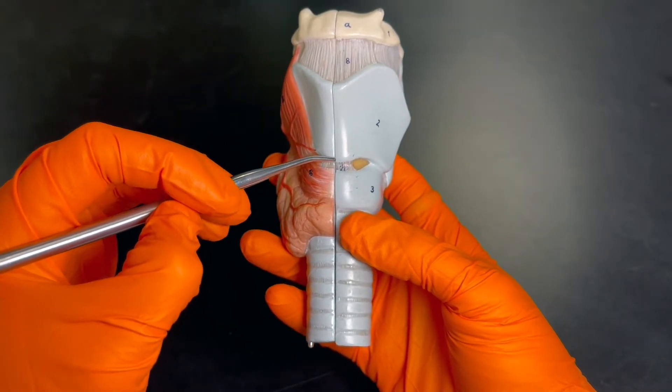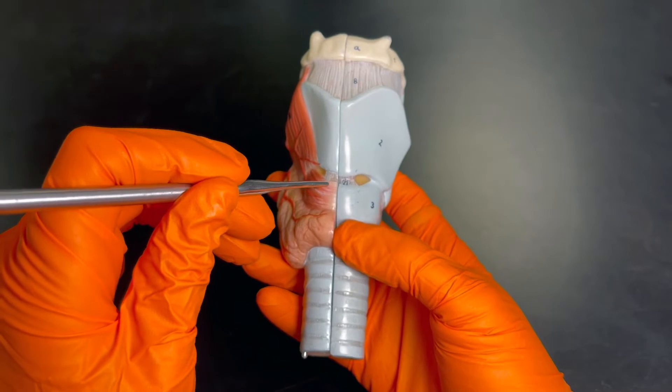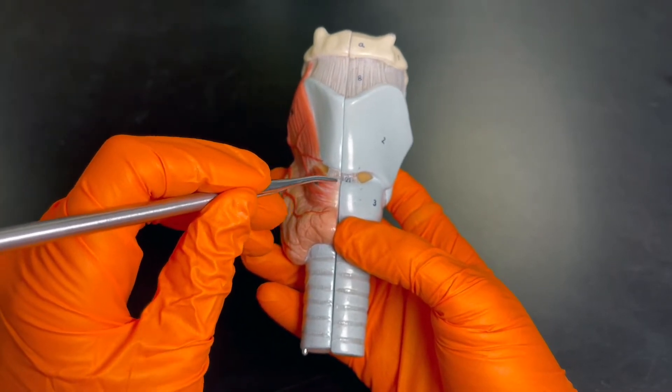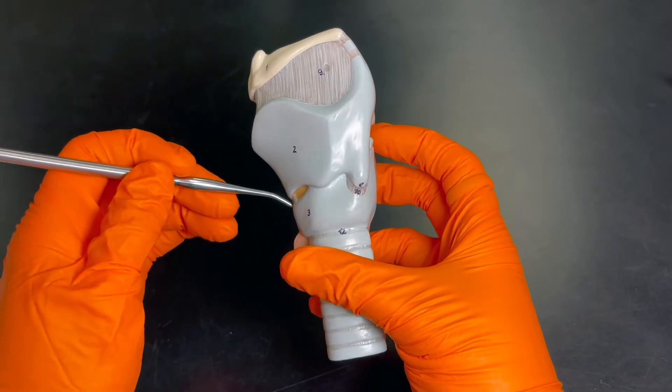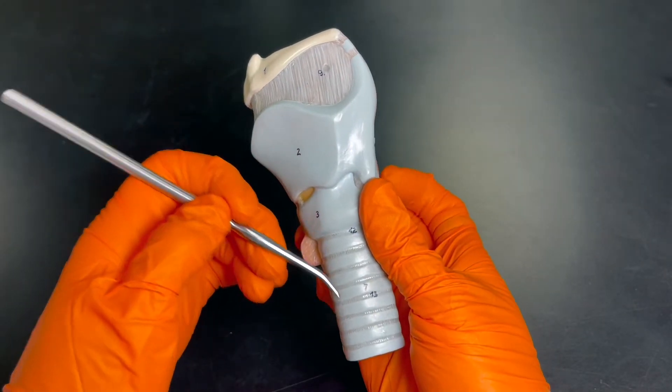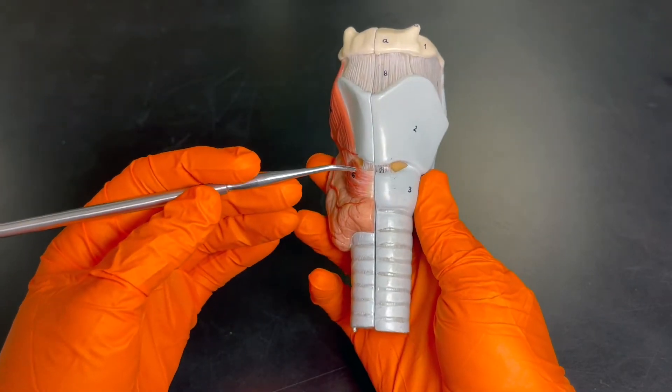One way is by making an incision right here through the cricothyroid membrane or ligament, and that is called a cricothyroidotomy. Essentially what can happen is that the incision can be made in this area and a tube can be placed in, and you can see that's a direct connection to the trachea and therefore the lungs.